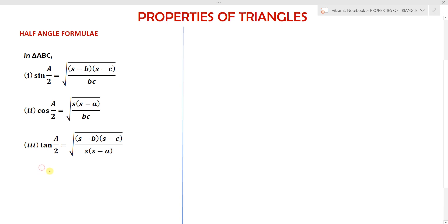Here, s is the semi-perimeter, which is (a+b+c)/2. In general, the perimeter 2s equals the sum of the lengths of the sides of a triangle, where small a, small b, and small c are the lengths of the sides of the triangle.